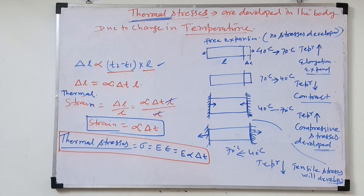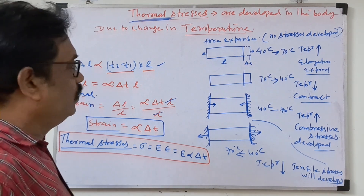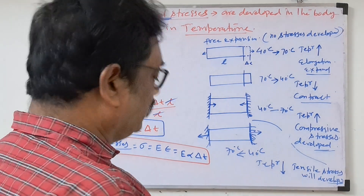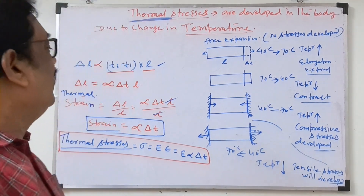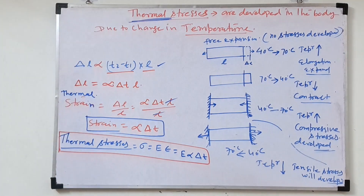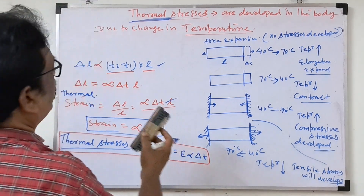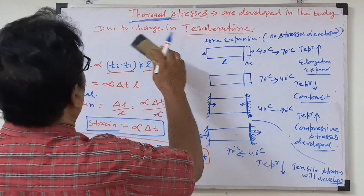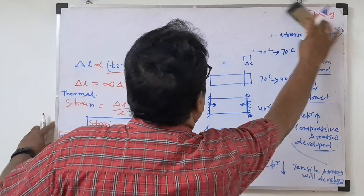This is the formula. Once we solve the questions, we will use this. Now, other things — what is yielding? Yielding conditions — I will give one more example and write that formula also.